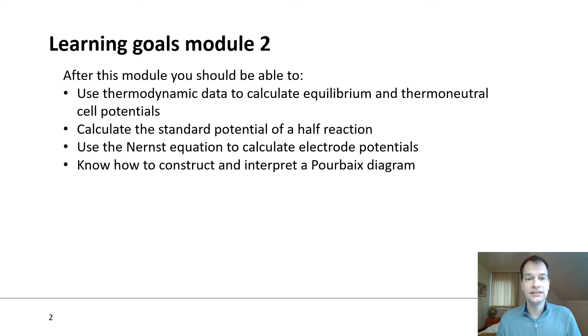These learning goals are listed on this slide. You can see here that the learning goals are that you should be able to use thermodynamic data to calculate equilibrium and thermoneutral cell potentials. You should be able to calculate the standard potential of a half-reaction, use the Nernst equation to calculate electric potentials, and know how to construct and interpret a Pourbaix diagram.